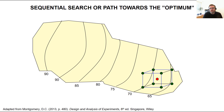RSM can be viewed as the procedure for performing a sequential search, or finding the path towards the optimum — like a maximization, for example — through experimentation. In this illustration, the yellow area is the region of operability where we are allowed to run our process. The contour lines illustrate how the response changes over this region, showing response values such as 65, 70, and so on. These contour lines are not known beforehand, but this is for illustration purposes.